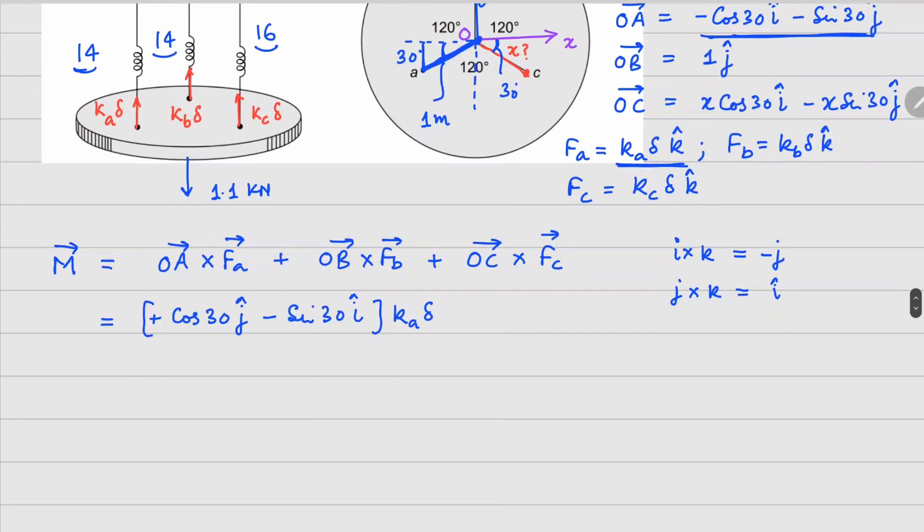Second term, which is your OB, so j cross with k, this is going to give you i. This is going to be kb times delta i cap. Third term here, your i cross k minus j.